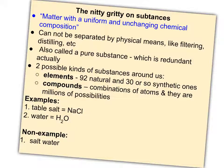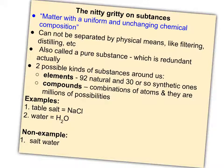Some simple examples of substances would be table salt, NaCl, or water, H2O. These are both compounds because they have more than one kind of element. If you just had oxygen gas or hydrogen gas, those would be elements — also examples of substances. A non-example is salt water; the fact that we don't have a formula to write for it is a hint that it is not a substance.